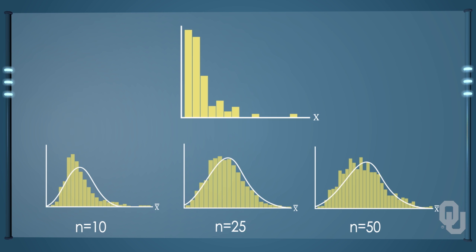For skewed distributions, our intuition would say that this will take larger sample sizes to move to a normal distribution. Indeed, that is what we observe from the simulation. Nevertheless, as the sample size reaches 50, not considered a very large sample, the distribution of sample means has very decidedly gained the shape of the normal distribution.